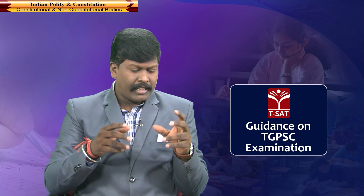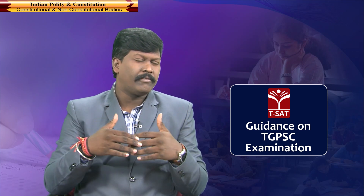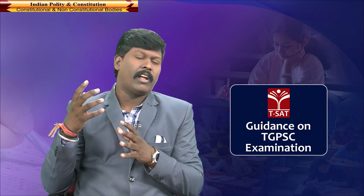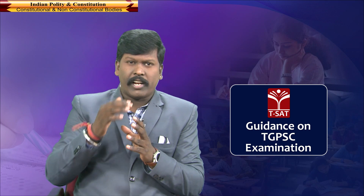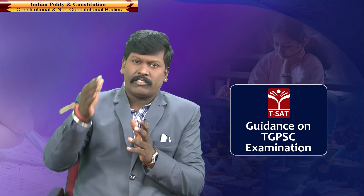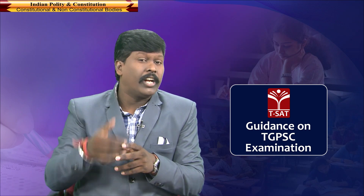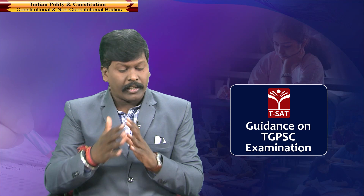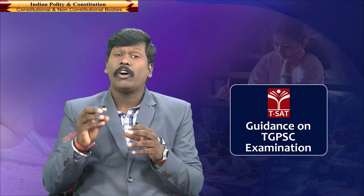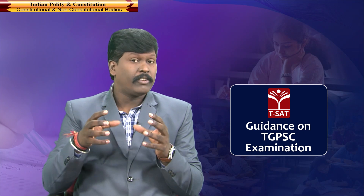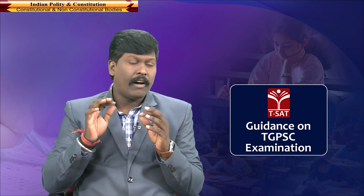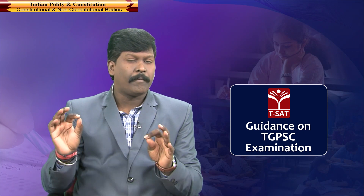So, in India, institutions are divided into two types: constitutional and non-constitutional. Constitutional bodies derive their authority directly from the constitution. Non-constitutional bodies are of two types: statutory bodies established by a law, and non-statutory bodies established by an executive order. Now let us see some important objective-type questions from this topic expected for the TSPSC Group 1 upcoming prelims.